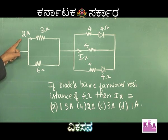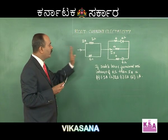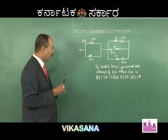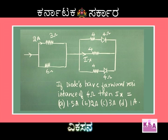If the current through this 3 ohm resistance is 2 ampere, you are asked to find out Ix. If the diodes have forward resistance of 4 ohm, then Ix is equal to: option A 1.5, option B 2 ampere, option C 3 ampere, and option D 1 ampere.